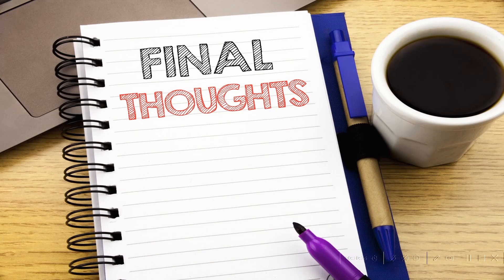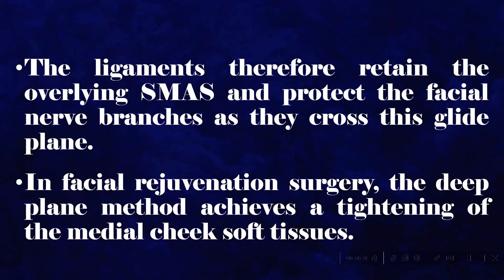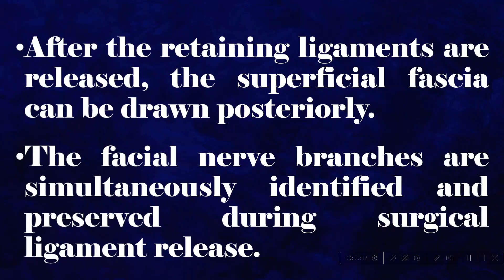Final Thoughts: The retaining ligaments act as markers to the position of the facial nerve branches in the cheek. The zygomatic and buccal branches emerge from the masseteric fascia and cross the sub-SMAS plane to the underside of the SMAS. The ligaments therefore retain the overlying SMAS and protect the facial nerve branches as they cross this glide plane. In facial rejuvenation surgery, the deep plane method achieves a tightening of the medial cheek soft tissues. After the retaining ligaments are released, the superficial fascia can be drawn posteriorly, and the facial nerve branches are simultaneously identified and preserved during surgical ligament release.